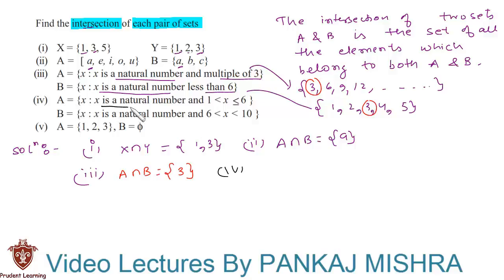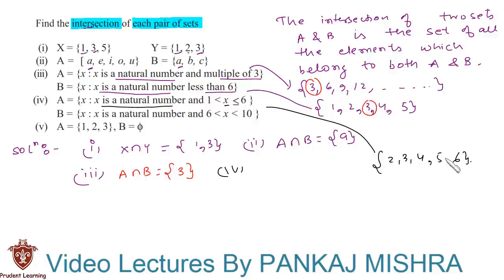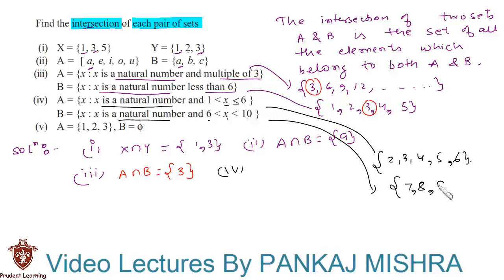In the fourth section, A is the set of x such that x is a natural number greater than 1 and less than or equal to 6, meaning A contains elements 2, 3, 4, 5, and 6. B is the set of x such that x is a natural number between 6 and 10, giving elements 7, 8, and 9. There is no common element, so A intersection B is an empty set.